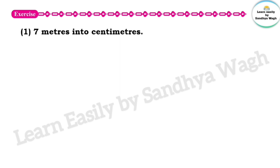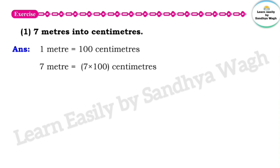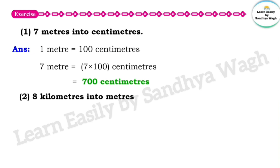Question 1: convert 7 meters into centimeters. 1 meter is equal to 100 cm, so we multiply 7 by 100 cm. Therefore, 7 meters is equal to 700 cm. Next question: 8 kilometers into meters. 1 kilometer is equal to 1000 meters, so we multiply 8 by 1000 meters.